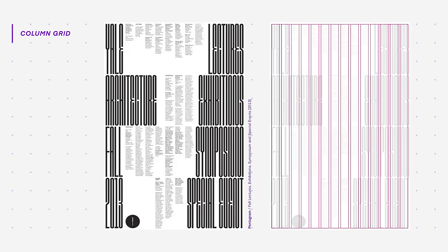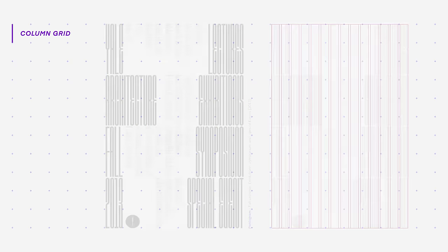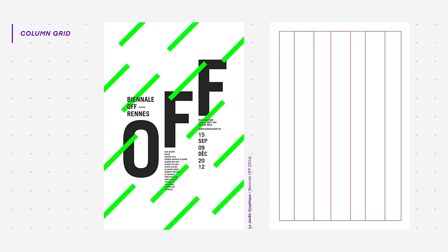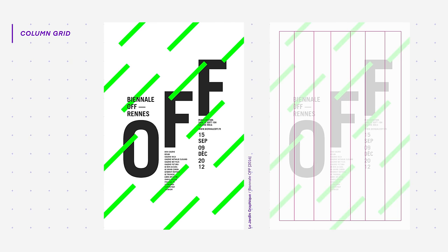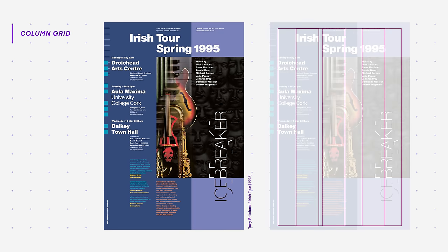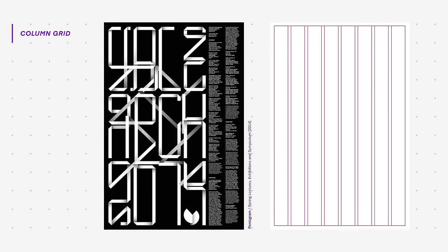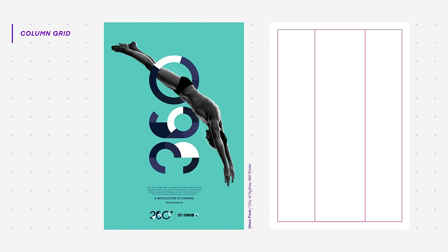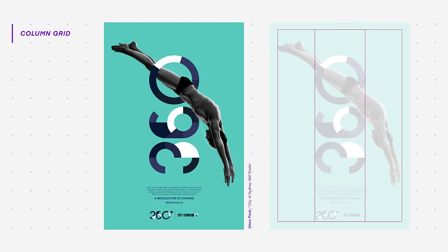Here are some examples of poster designs that use column grids. The column grid is especially practical when dealing with large amounts of type, as a designer can flow the type from one column to the next and maintain a consistent paragraph width. Content looks great when aligned in columns, and it gives content a clear sense of structure. Column grids are commonly used in type-heavy designs such as magazines, newspapers, and websites, though they can also be used effectively in poster design.